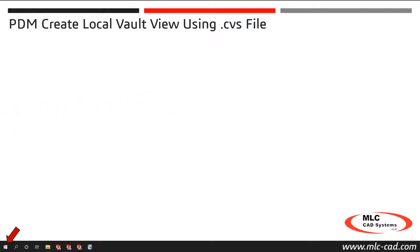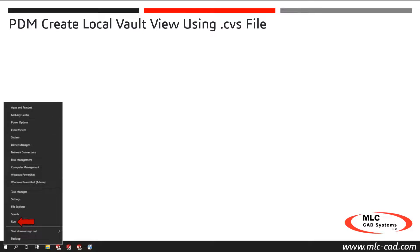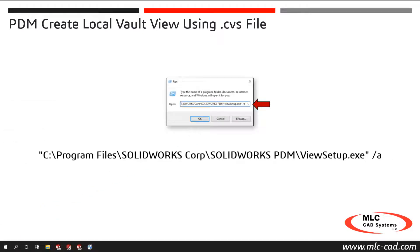Right-click the Windows Start icon, then select Run. In the Run dialog, enter the text exactly as it is shown here, including the quotation marks. This text includes the path to the view setup application. The example text includes the path for the default installation. If your installation is not located in the default location, then replace the path text accordingly.